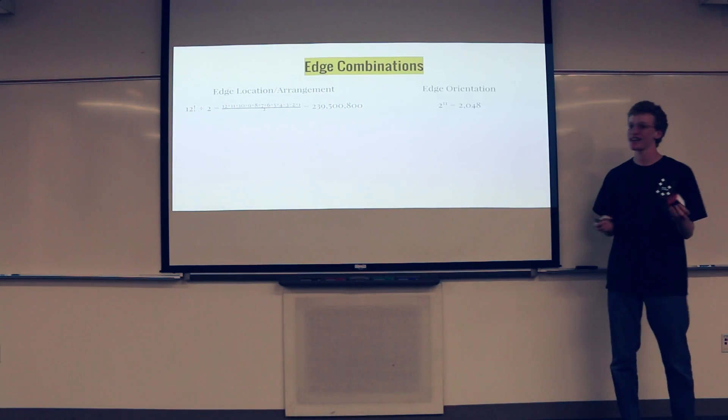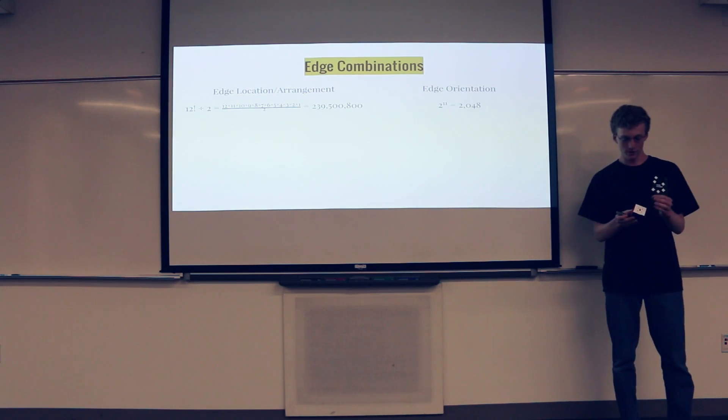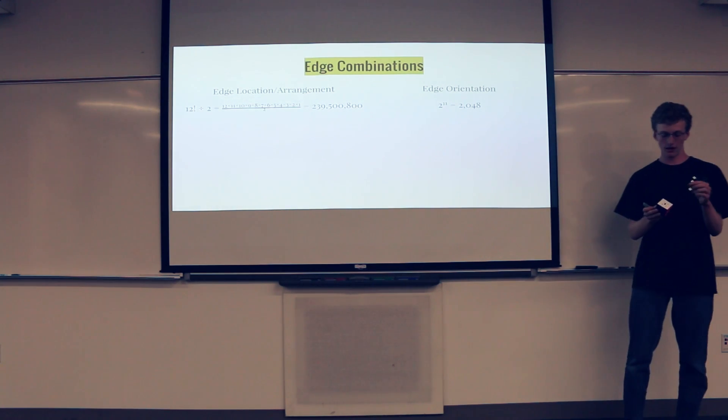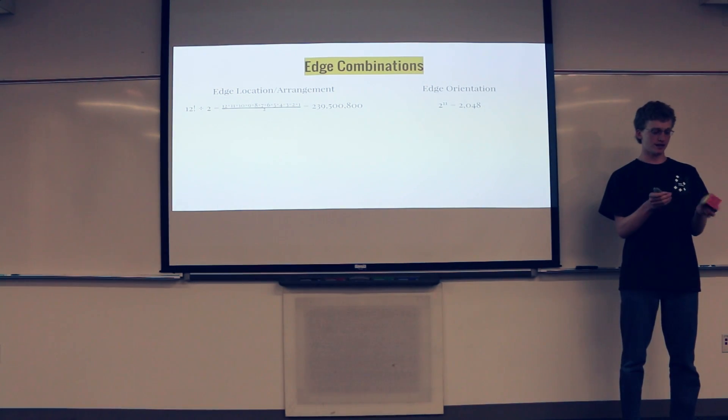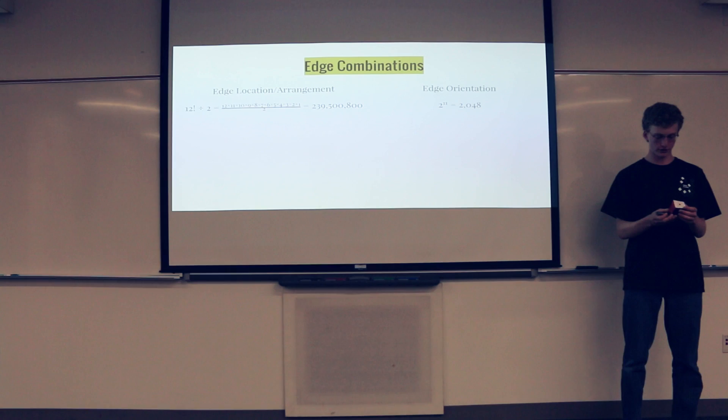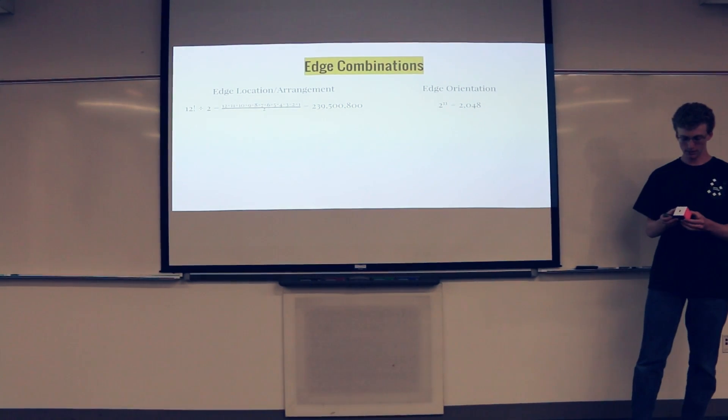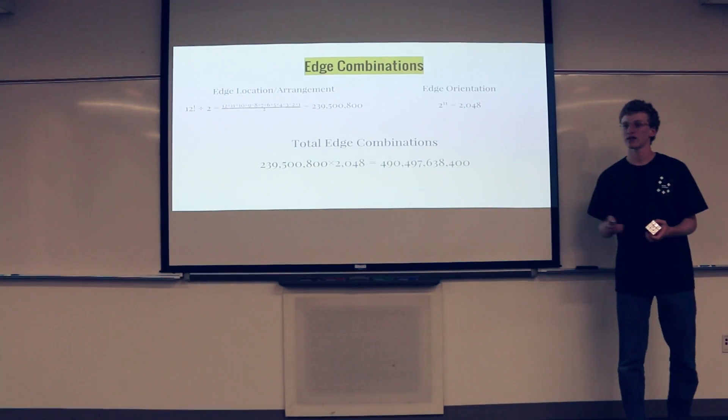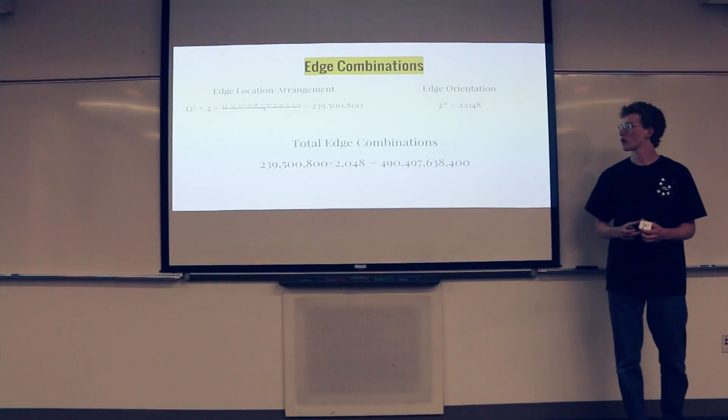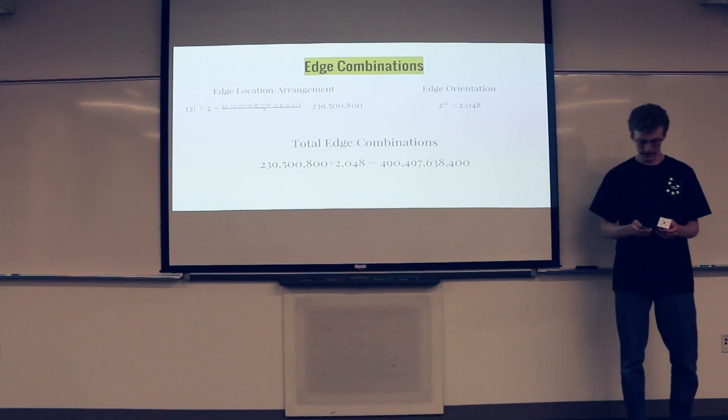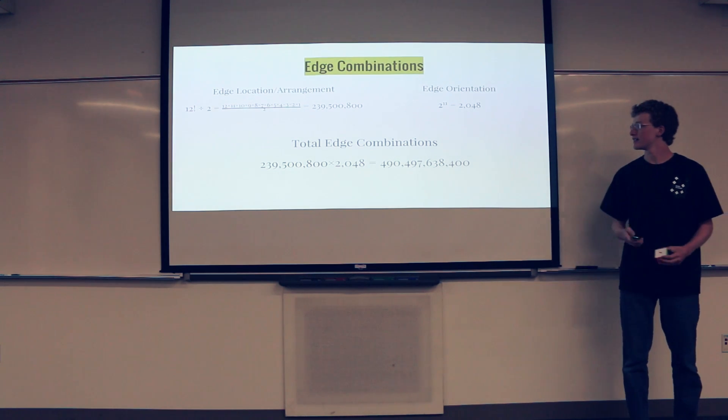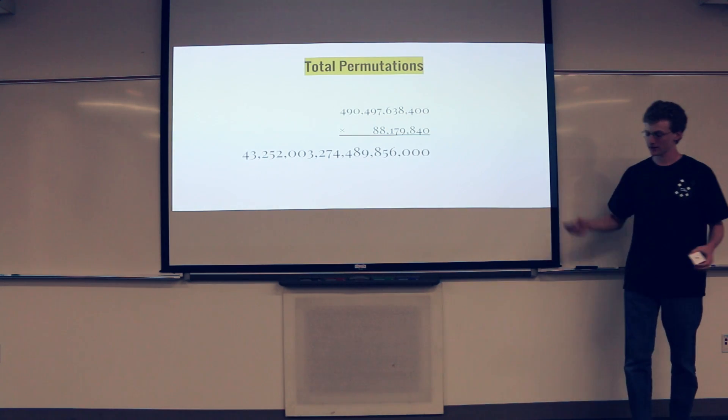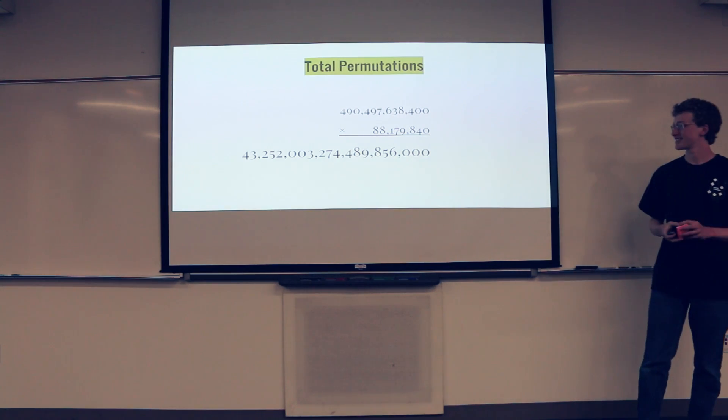So, we'll move on to the orientation of the corners, or of the edges, which is exactly the same logic as the corners. There are, each edge can be turned one of two ways, and there are 12 of them. The orientation of the last one is based on, is dependent on the orientation of the first 11. So, it's 2 to the power of 11, is the number of edge orientations. Multiplying these together, we get an even bigger number, it's almost 500 billion, and then we'll multiply that with the number of corner combinations. That was calculated a minute ago, and we get that really big number from a few slides ago. So, I'm not going to waste any more time saying it again.